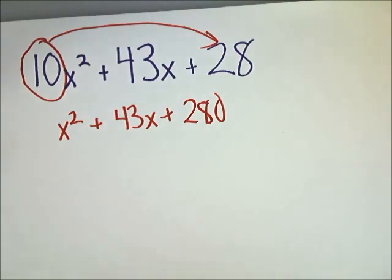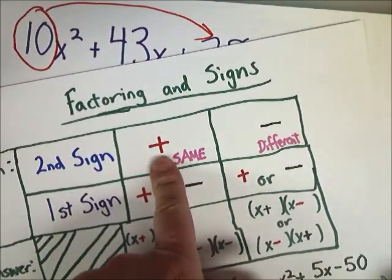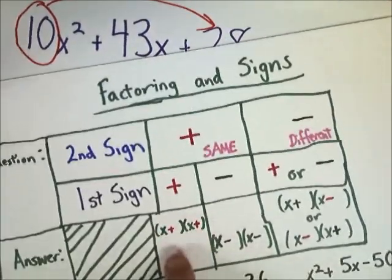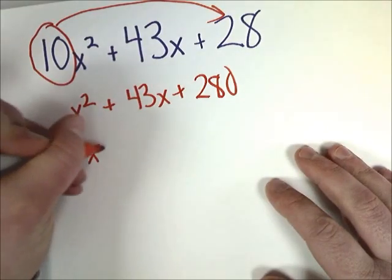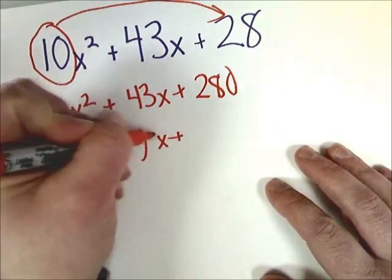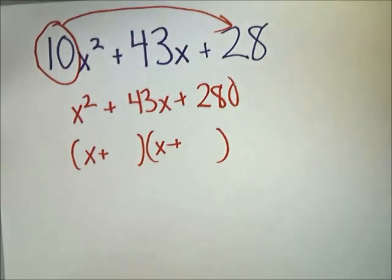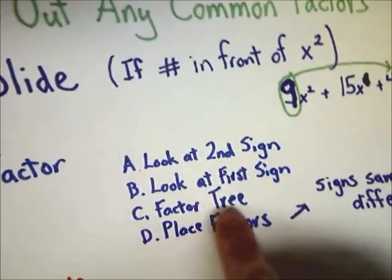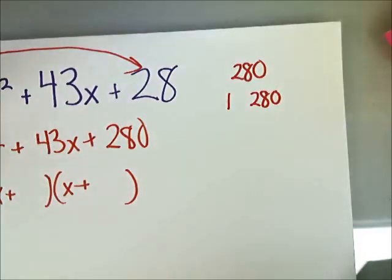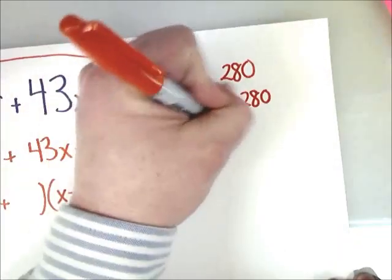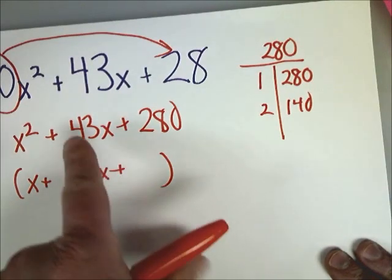Now, let's look at the signs to set up the problem. The second sign, in this case, is a plus, so that means both the signs are going to be the same. The first sign is also plus, so my answer is going to be in the form of x plus something and x plus something else. Now, that slide, and we already picked the signs, so we're factoring right now. Now we're going to have to do a factor tree. So a factor tree for 280. 1 and 280. 2 and 140.